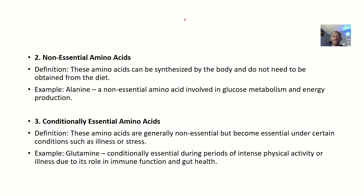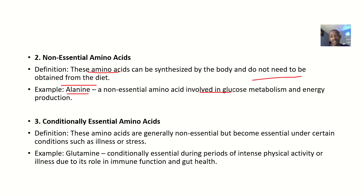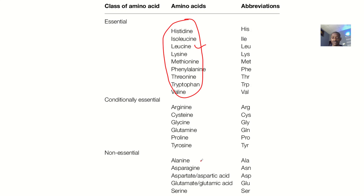Non-essential amino acids are those the body can make even if you don't eat them — they can be synthesized by the body and do not need to be obtained from the diet. An example is alanine, a non-essential amino acid involved in glucose metabolism and energy production. Other non-essential amino acids include asparagine, aspartate, glutamate, and serine.